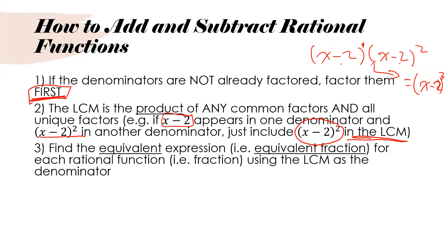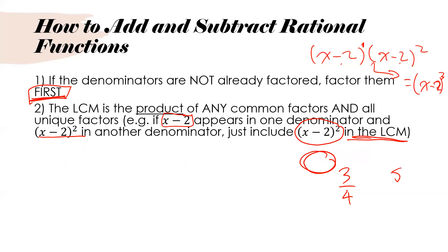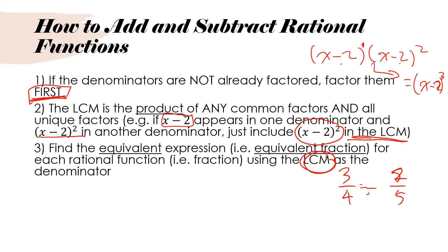Once you find the lowest common multiple, you find the equivalent expression — this is extremely similar to what you did with fractions. You're going to change the numerator and denominator so that you have the lowest common multiple as the denominator. Just like with 3 over 4 and 2 over 5: once you know the common denominator is 20, you think about how to go from 4 to 20, and whatever you do to the denominator, you do to the numerator. Same idea here.